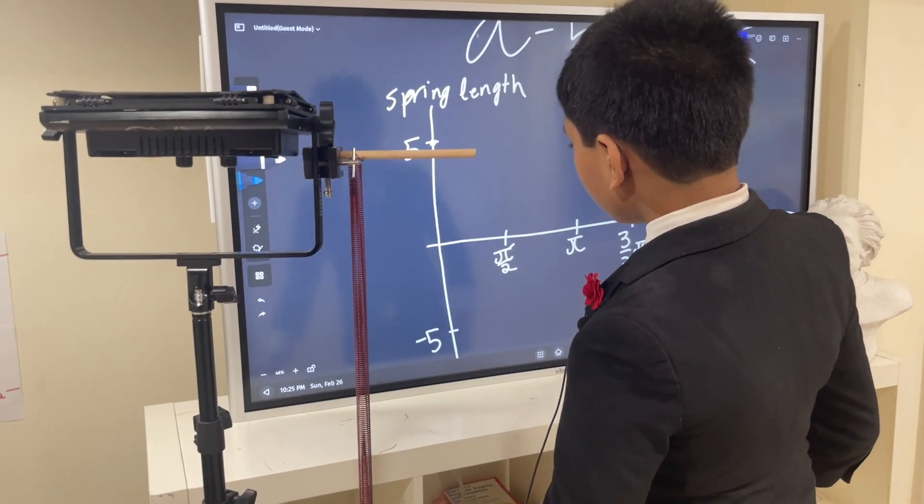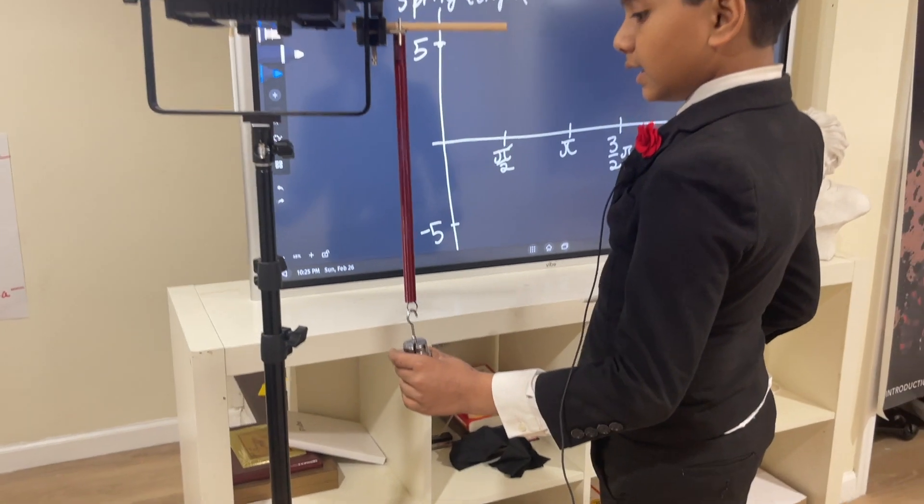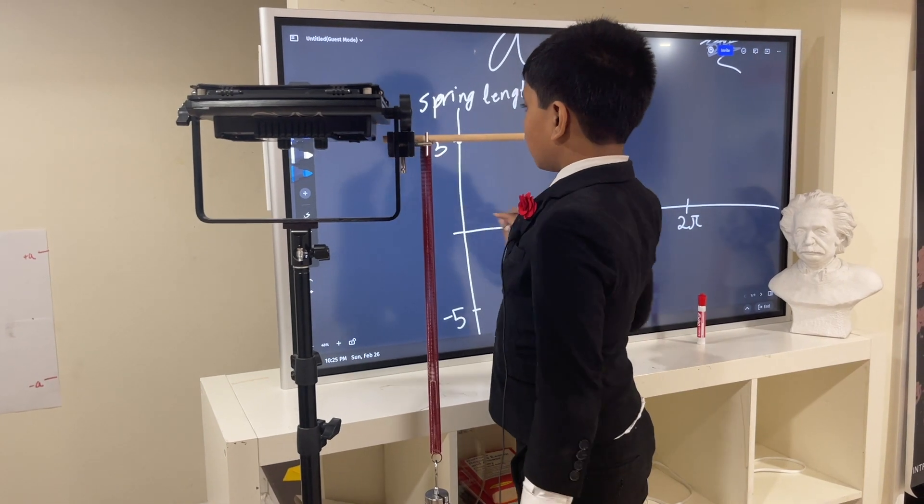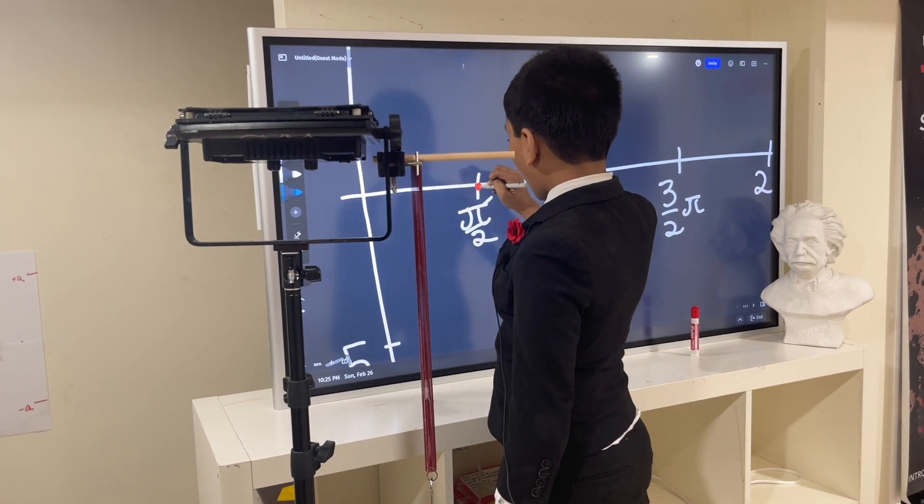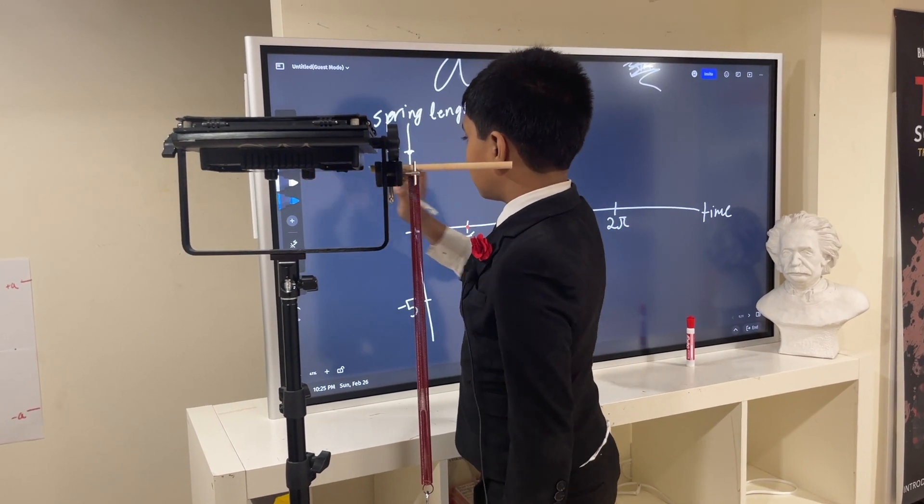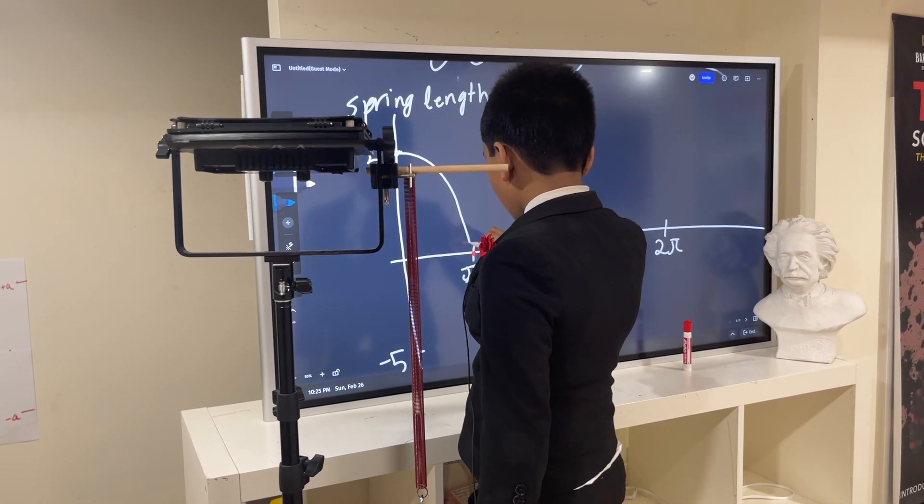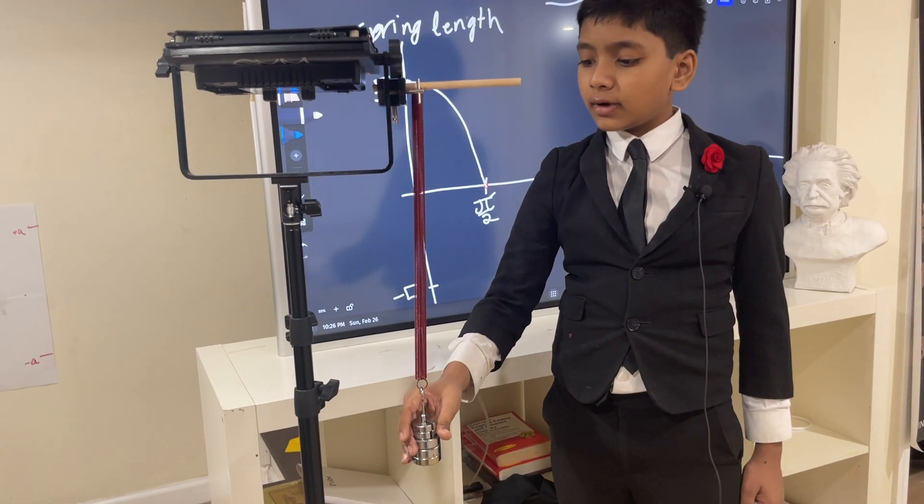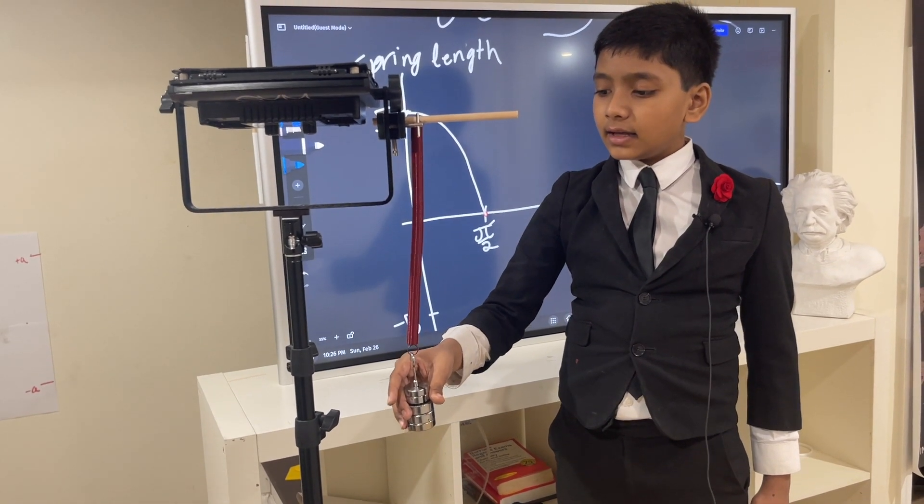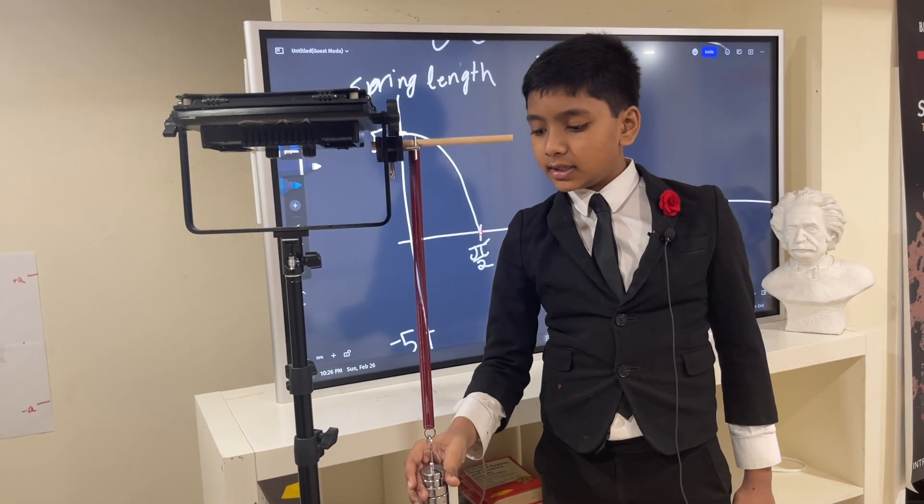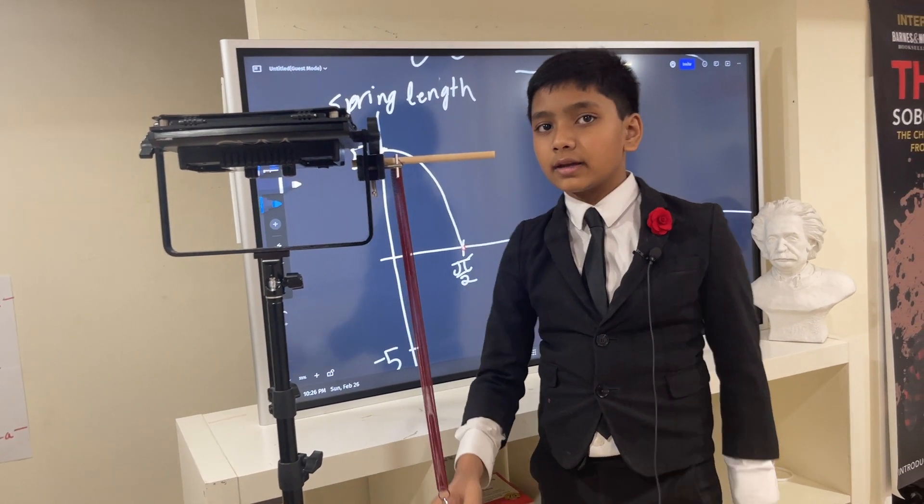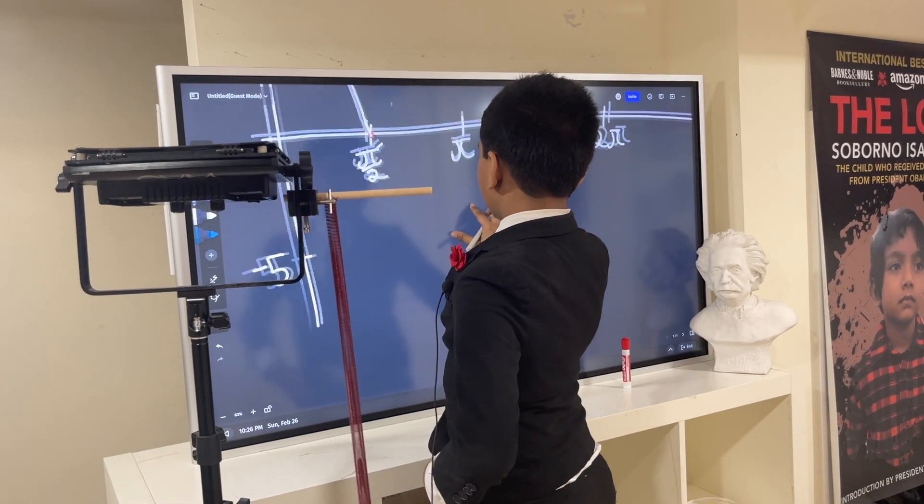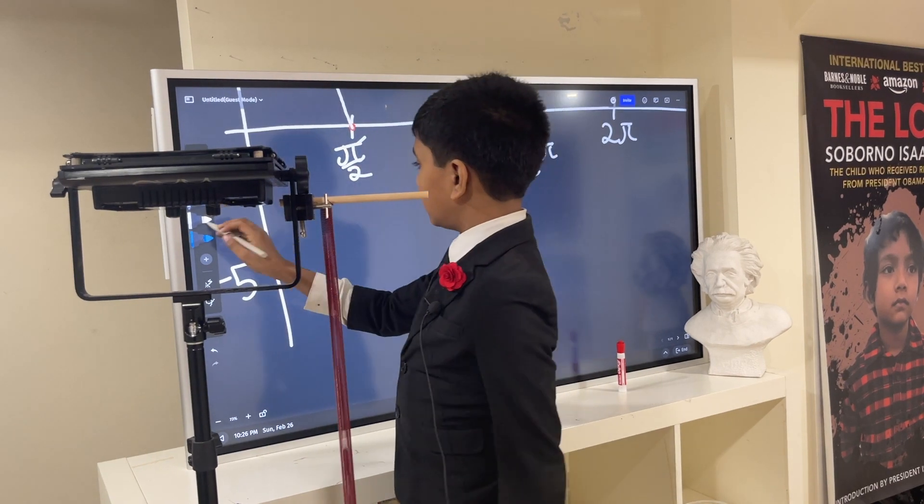This is the maximum length, and this is obviously where it starts from. Then it goes to its resting length at pi over two. As it comes slowly to rest here, then it starts compressing. So the spring goes to its minimum position, which is negative five.